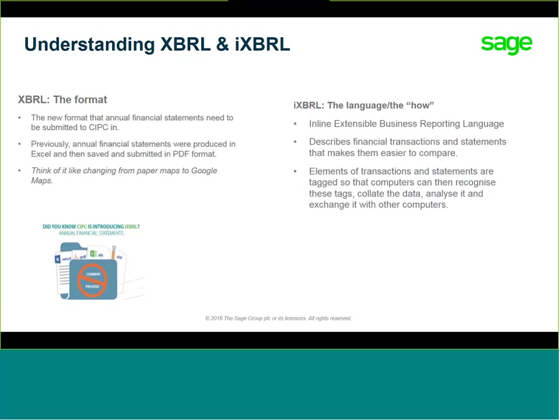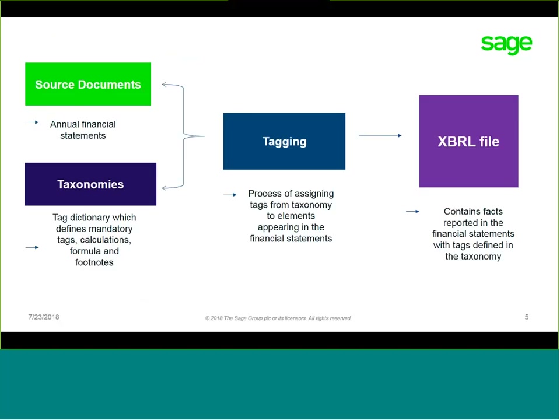What is XBRL and iXBRL? iXBRL — the technical term — is Inline Extensible Business Reporting Language. iXBRL is a structured way of digitally reporting your annual financial statements. For us accountants, a piece of data in your financial statements is tagged. You will then create a file with this data and upload it. XBRL is basically an identifier for elements and values, all of which are defined in something called a taxonomy.